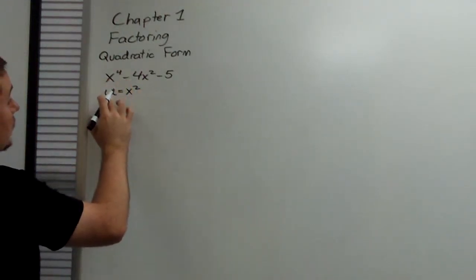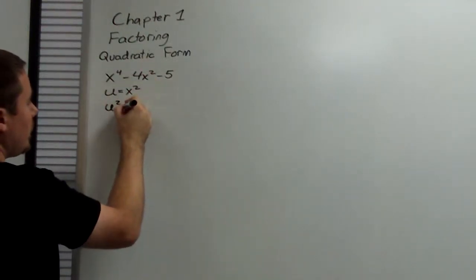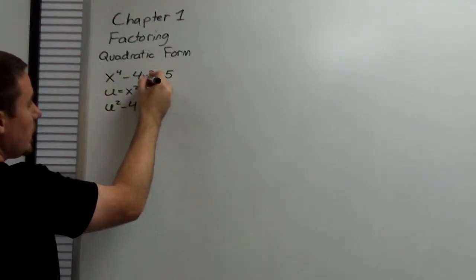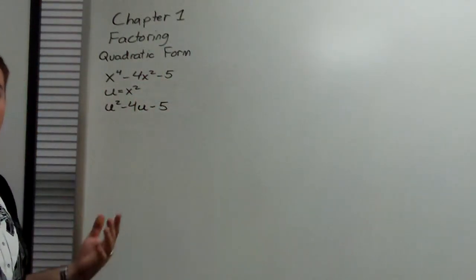So, if u is equal to x squared, x to the fourth is u squared. Minus 4 times, well, if x squared is u, then this is 4u. Minus 5, because the 5 doesn't have a variable, it remains untouched.